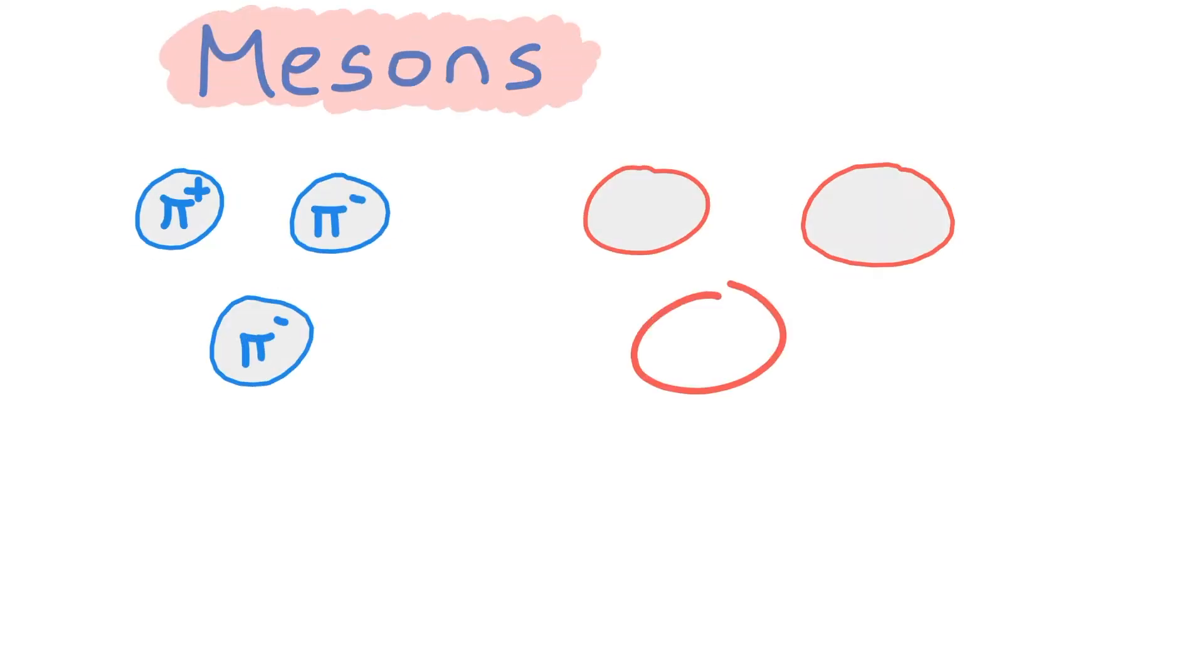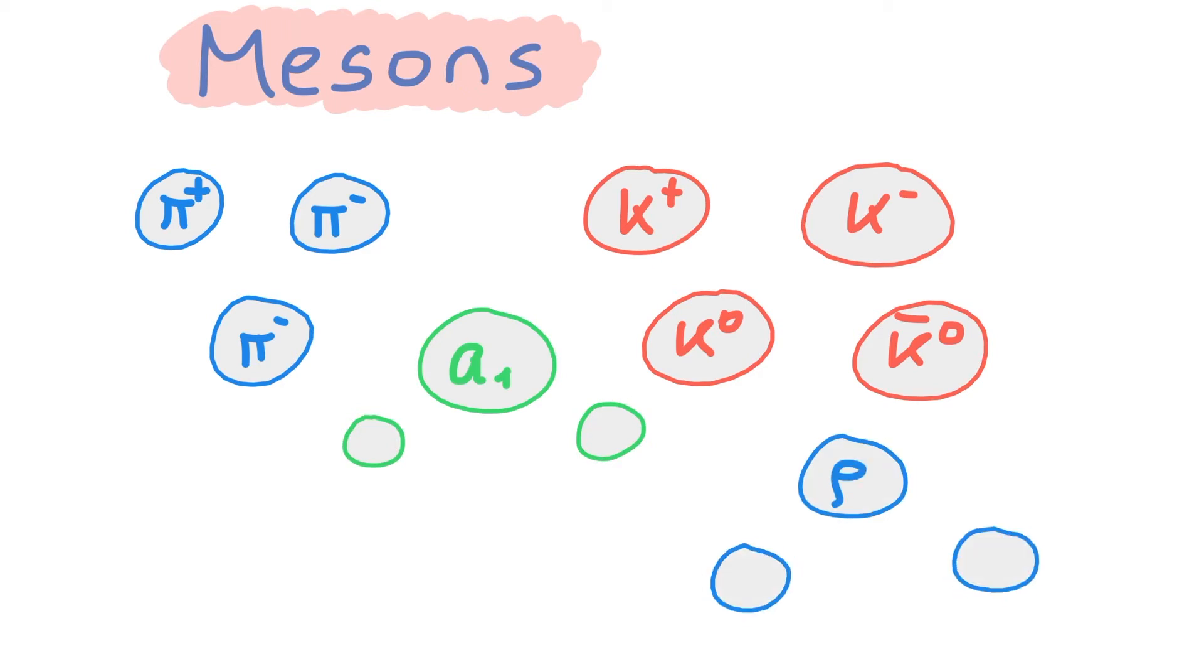Most of you probably know the pions or the kaons, but what about the A1, or the rho, the omega? Nowadays there are many different mesons appearing in experiments. Depending on their properties, they are assigned a certain name. Let's find out how this works.